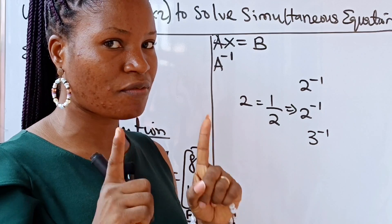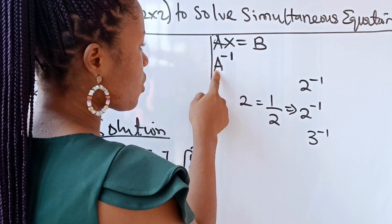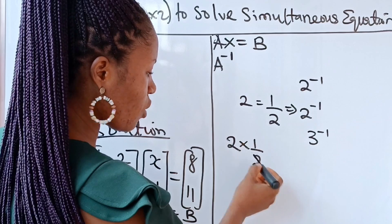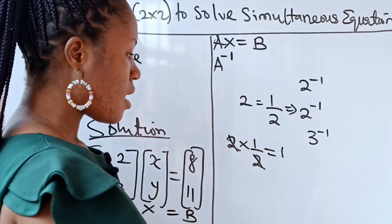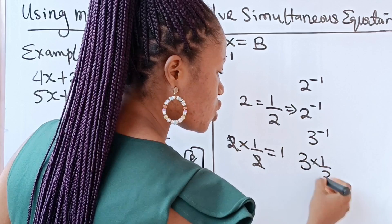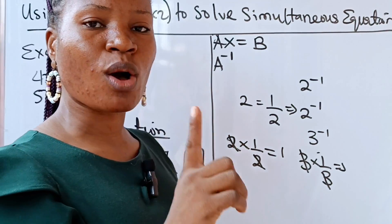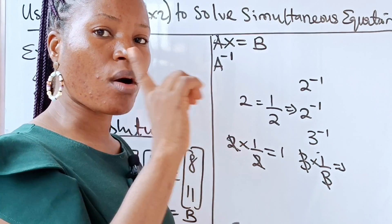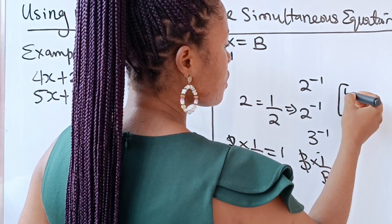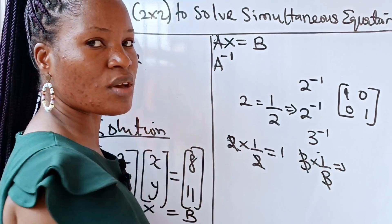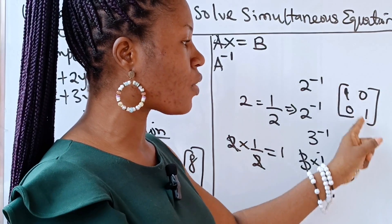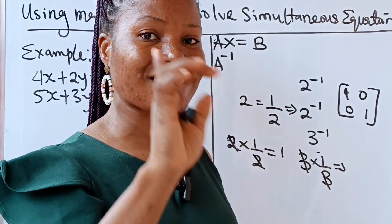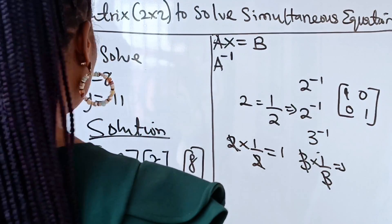We are introducing the inverse of A because when we multiply A⁻¹ by A, they cancel, leaving 1 — just as 2 times its inverse gives 1, and 3 times 1/3 gives 1. In matrix terms, 1 is called the identity matrix, written as [1,0; 0,1] for a 2x2 matrix — a matrix where the leading diagonal elements are 1 and all other elements are zeros. This identity matrix is denoted I.